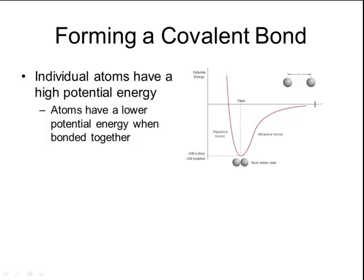Atoms are not stable with their given number of valence electrons and therefore have a high potential to combine with other atoms. When atoms bond together, they will have a lower amount of potential energy than the original individual atoms.